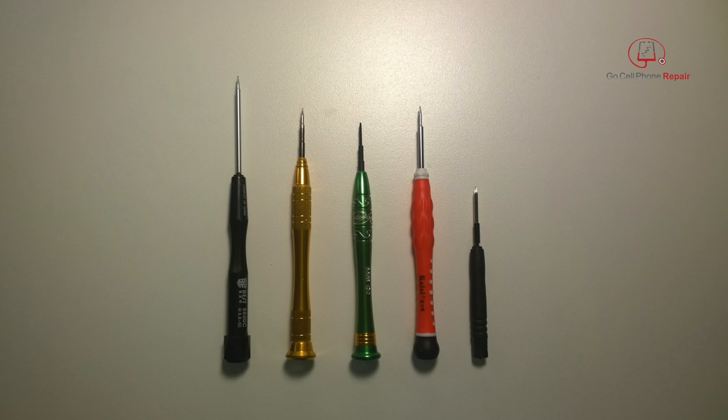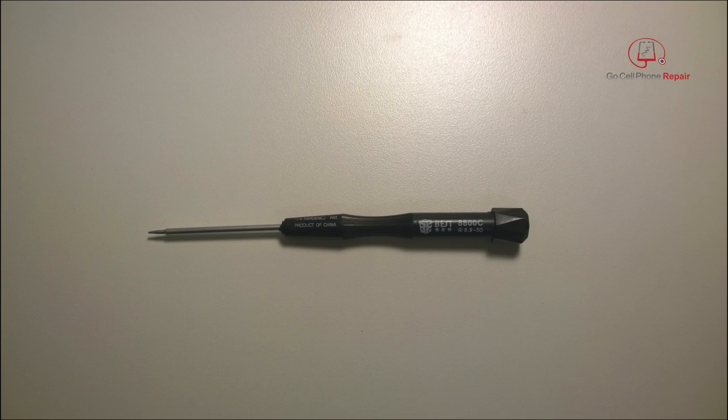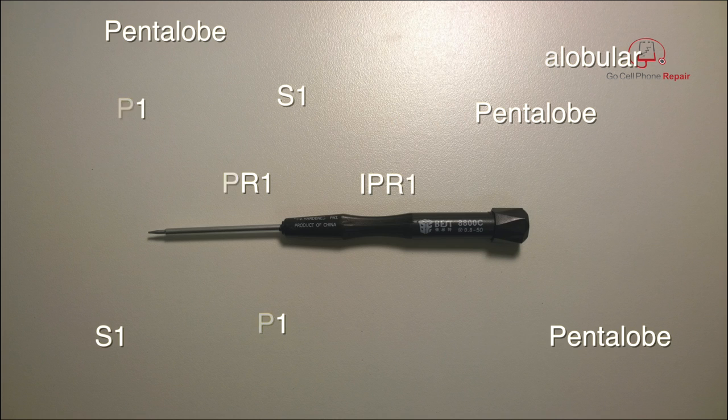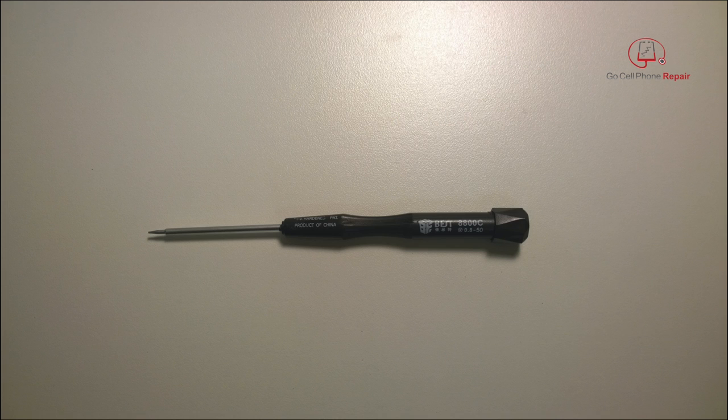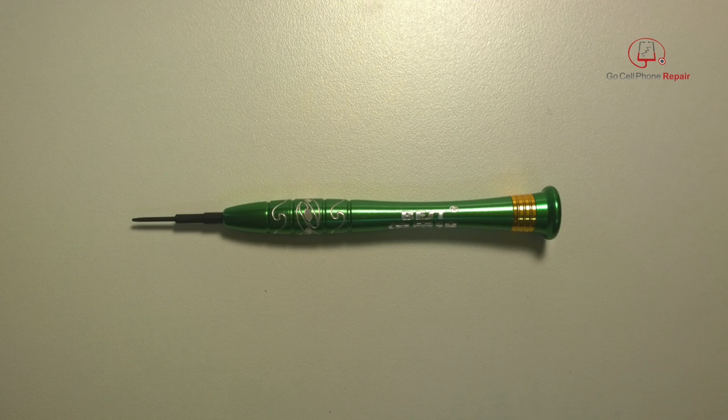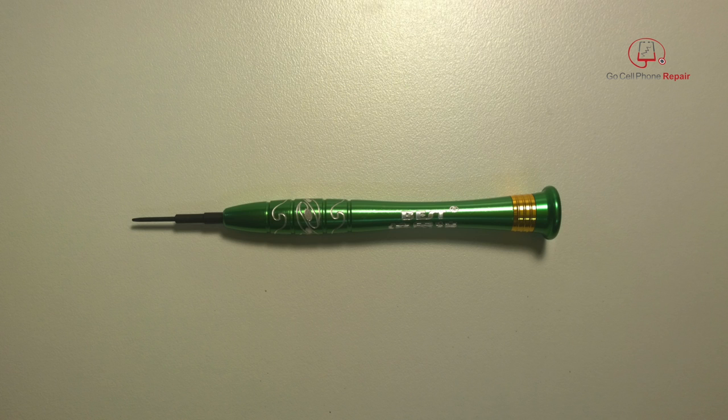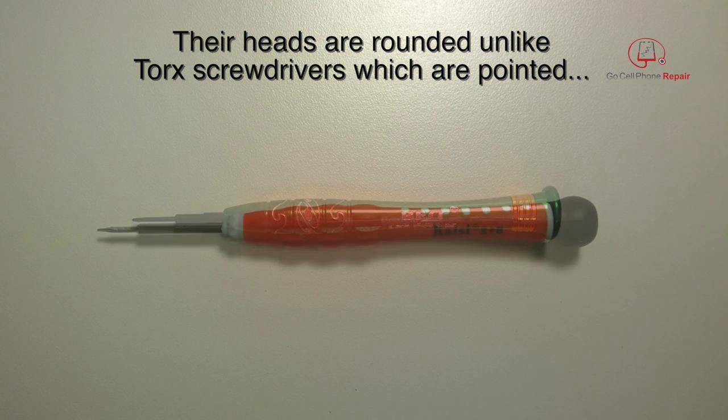These things, also known as pentalobe-ular screwdrivers, among a number of other names: 0.8mm pentalobe, P1, TS1, IPR1, they've got all kinds of goofy names, and that is probably thanks to the fact that they're relatively new. Apple was the first company to use them, and to my knowledge, they're the only ones that are still using this product, so you're going to need this if you're working on any sort of iPhone.